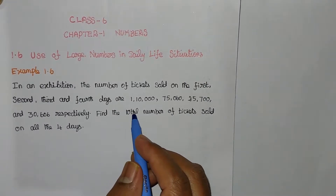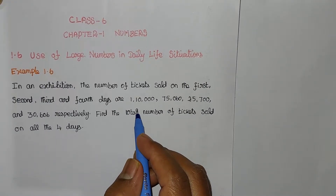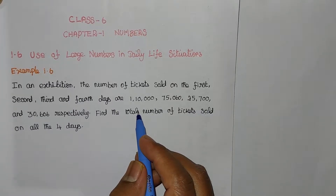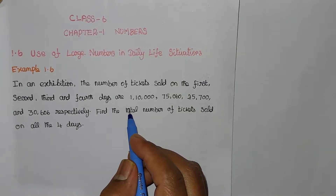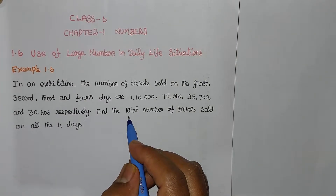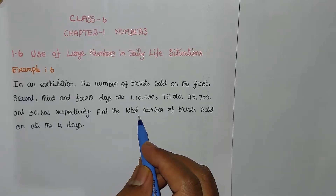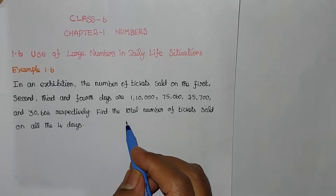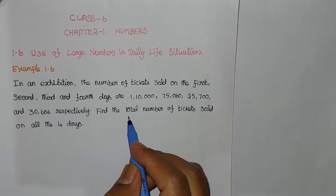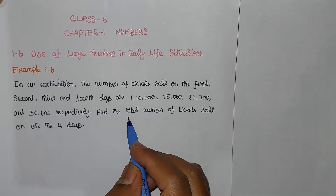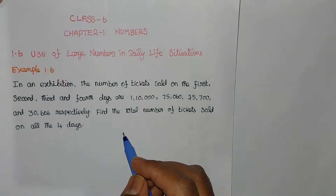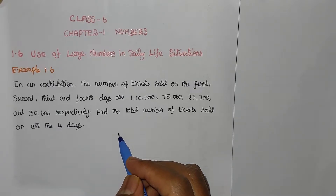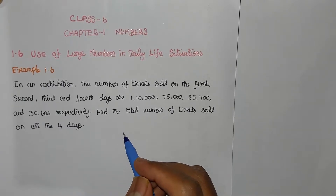We have ticket counts for the 1st day, 2nd day, 3rd day, and 4th day. We need to find the total number of tickets sold on all 4 days. We can add all the numbers to get the total tickets sold.